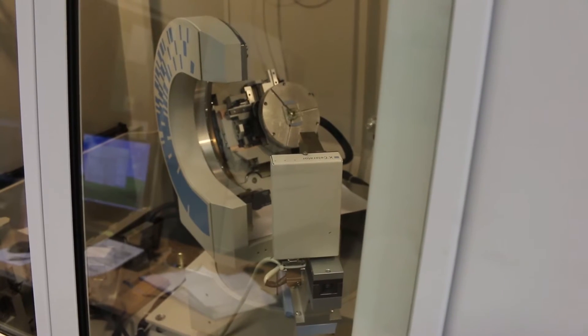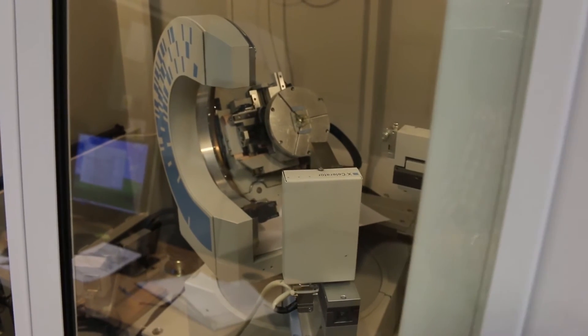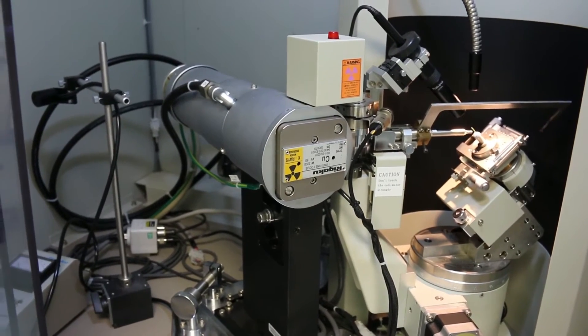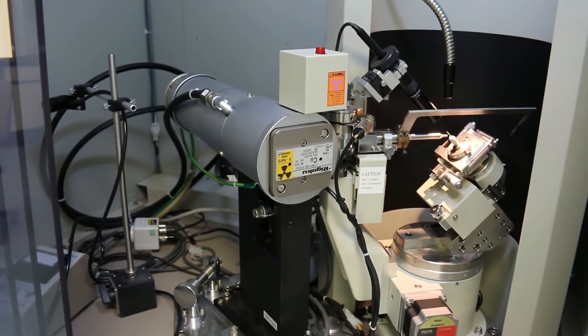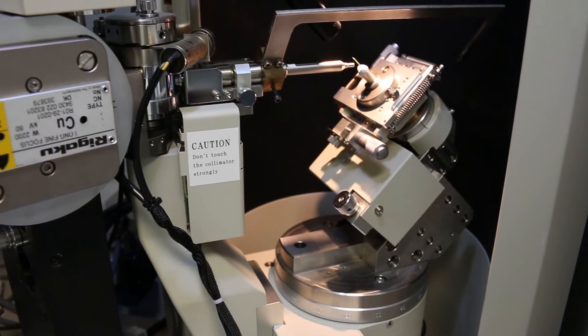We use x-ray diffraction to look at the structure of some of the materials that we're working with. We can use that either to look at defects within the glass, or to look at the structure of materials that we're using to develop new products, and help us to understand how those materials behave.